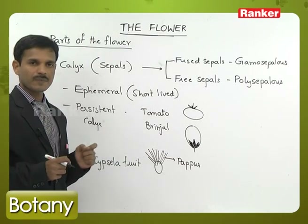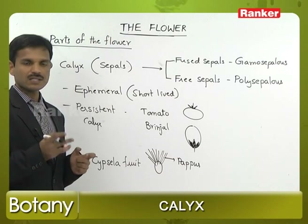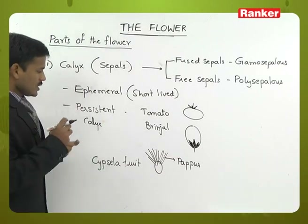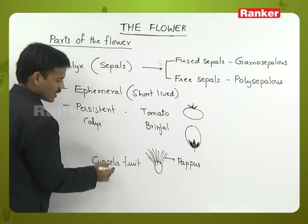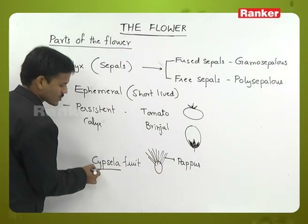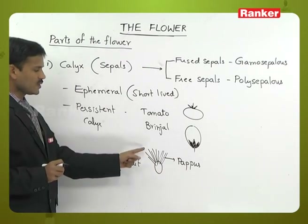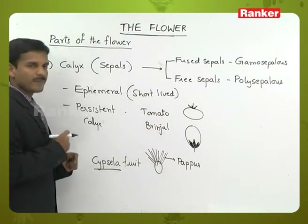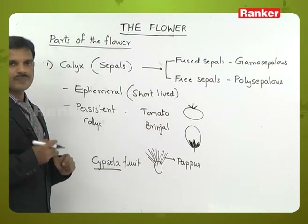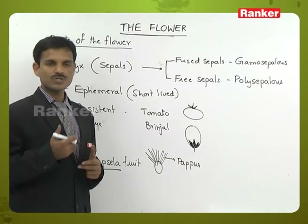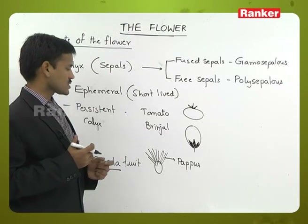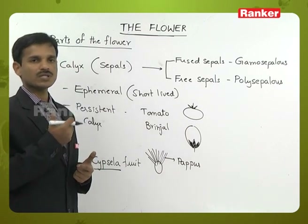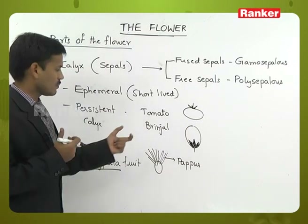Very small fruits are present in the Helianthus or sunflower family. In the sunflower plant, the fruits are called cypsela fruits. The cypsela fruits have persistent calyx in the form of hair-like structures known as pappus. Pappus helps in the dispersal and distribution of these small fruits from one place to another.